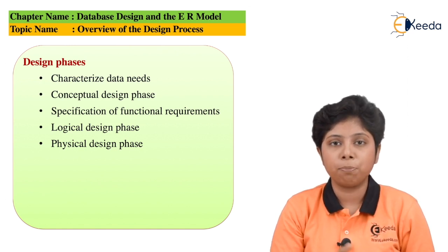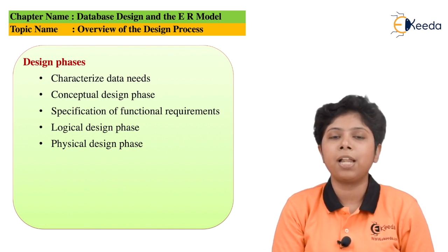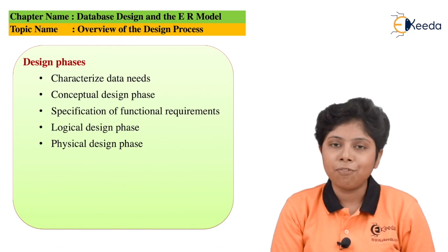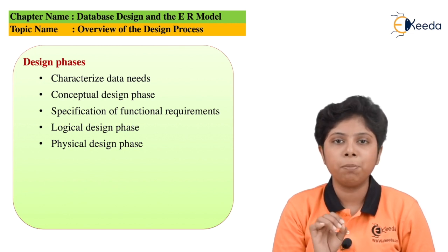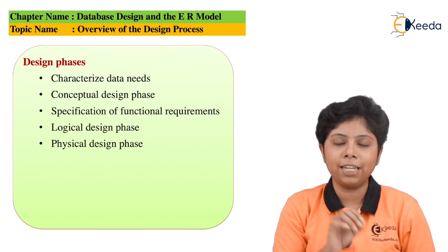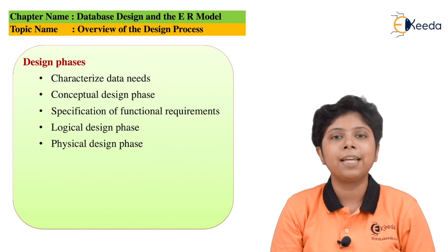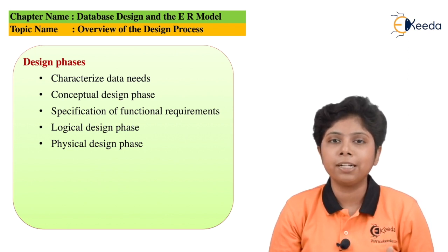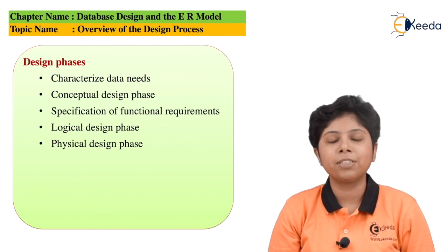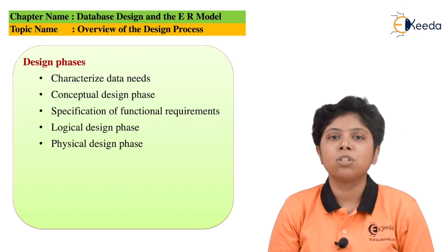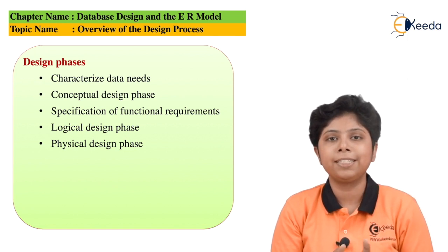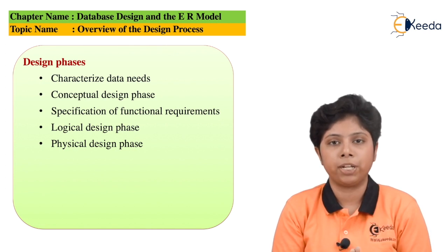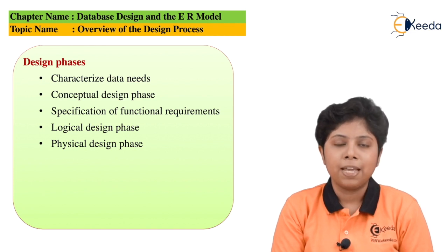The logical phase generally consists of putting constraints and conditions on the conceptual and actual schema so that we can specify all the fields precisely. For example, the amount deposited to a savings account should have a minimum value of 500, so we can put a check constraint that the amount should be greater than 500. The logical phase deals with all the conditional, integrity, and referential constraints that we can put in the database to make it more precise and correct.